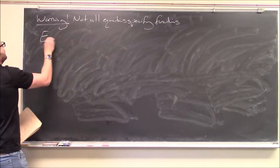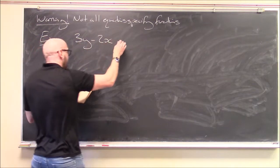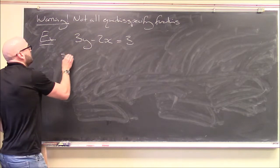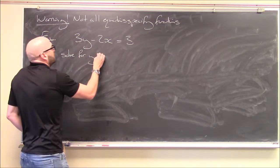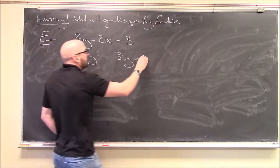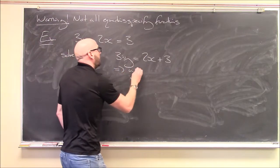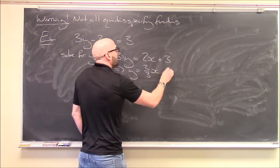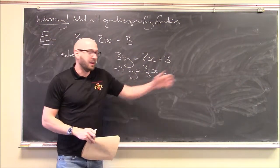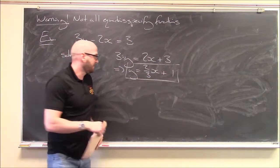Here's an example that does represent a function: 3y − 2x = 3. Solving for y: 3y = 2x + 3, so y = (2/3)x + 1. That's a straight line with slope 2/3 and y-intercept 1. You plug in x and get a unique output — this is a function.